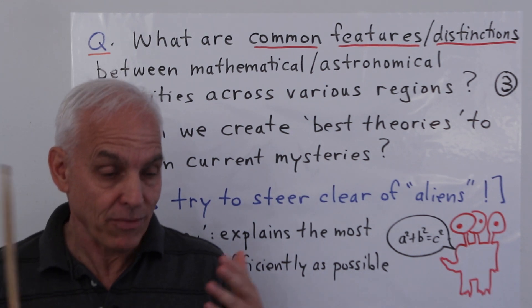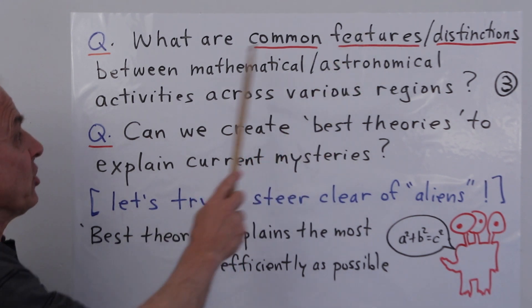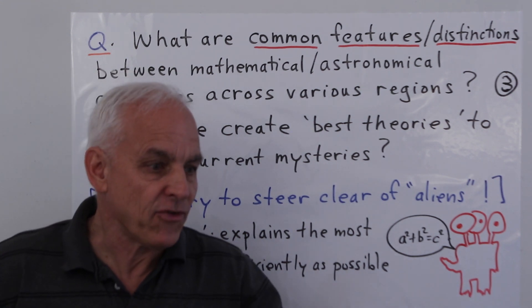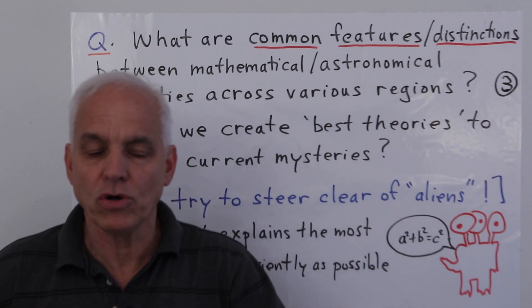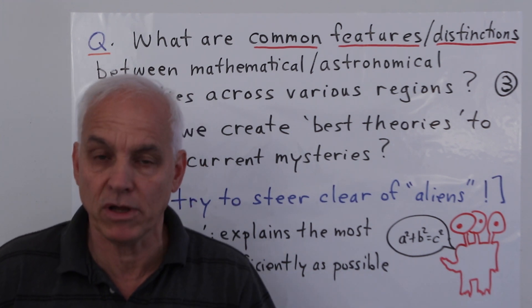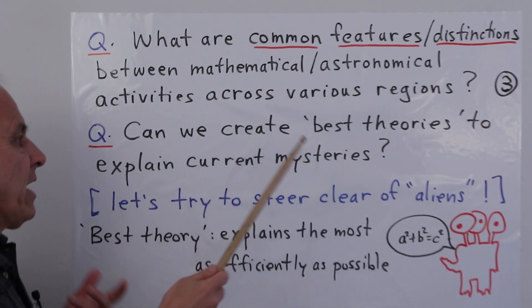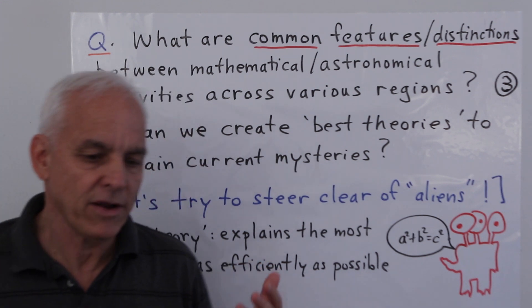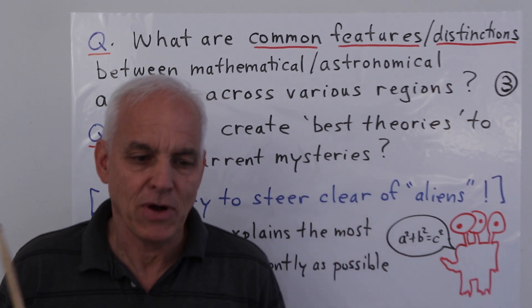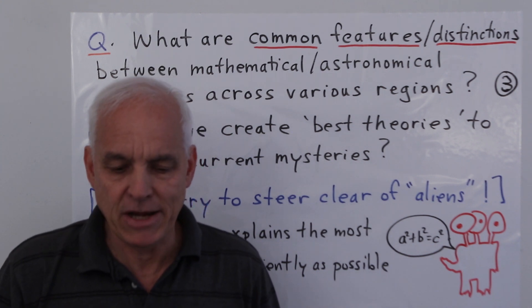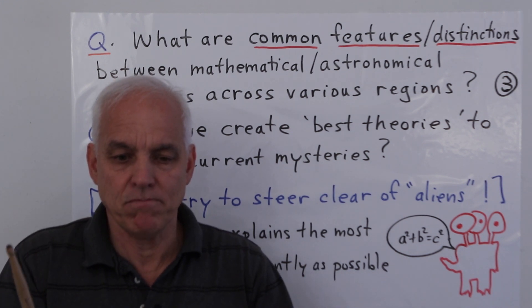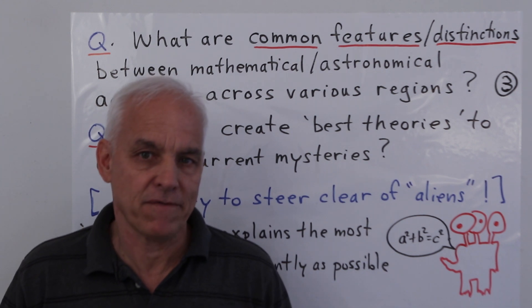Some natural questions that will arise: what are the common features or distinctions between mathematical or astronomical activities across various regions? Do we have separate developments that are more or less unrelated, or do we see some broader trends throughout the entire region or maybe even quite globally? Can we create the best theories to explain current mysteries? I don't want us to just say they did these incredible things and we have no idea how or why. I feel we should have some theories. These theories may not be the final word, but at least we should be able to put out some explanations that possibly cover the evidence we have.